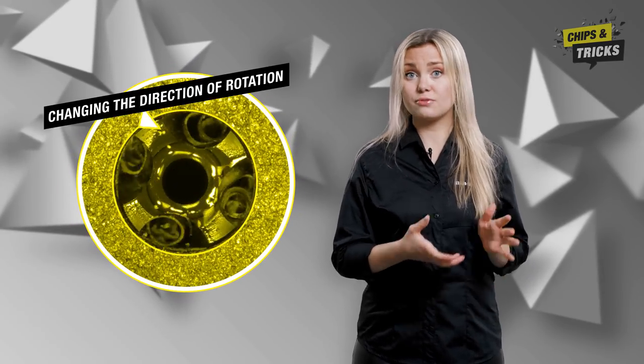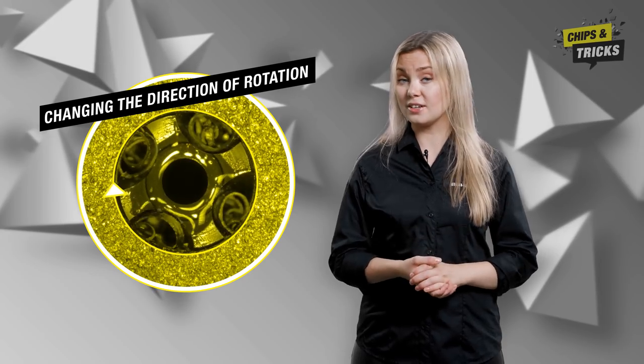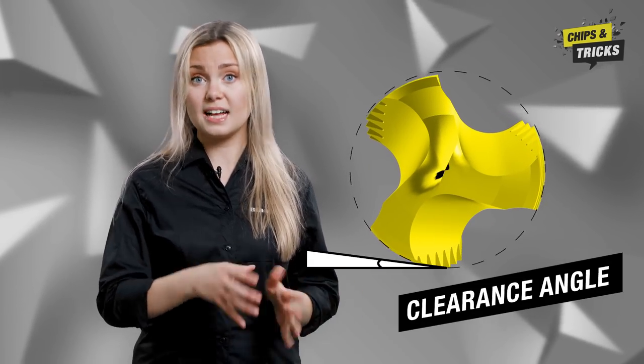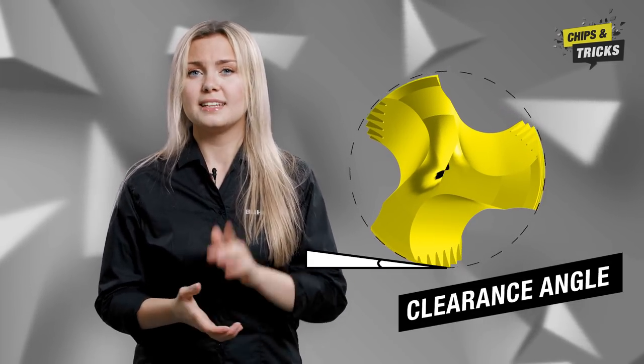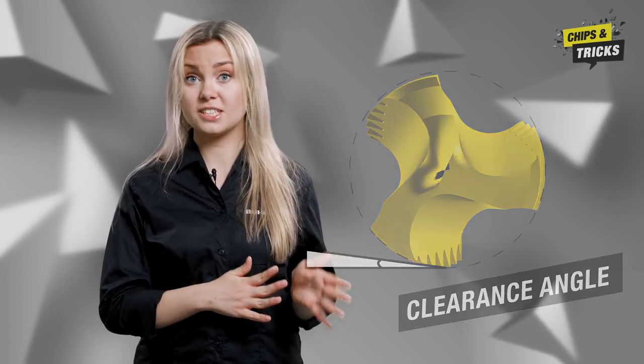If we change the direction of rotation of the tool and the last turn is not yet completely cut out, the tab can break. This is due to the so-called clearance angle. When the tool is unscrewed from the cut thread, this is a critical point as the chip is sheared off by the web of the tab.